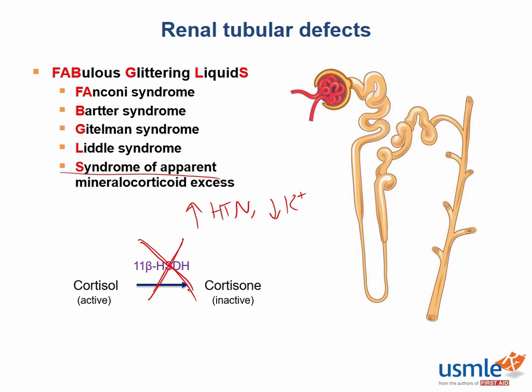Hypertension with hypokalemia in SAME can be treated with potassium-sparing diuretics. Step one probably won't ask you to memorize the exact genetics of these disorders, but will be more interested in testing you on the signs and symptoms of patients with these conditions, such as hypokalemia in Bartter syndrome or hypertension in Liddle syndrome.